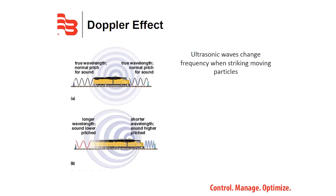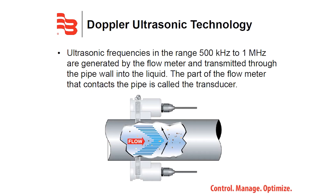An analogy would be a train coming towards you on a track. As the sender, ultrasonic frequencies hit the artificial reflectors contained in the fluid, and Doppler shifts indicate a velocity difference.